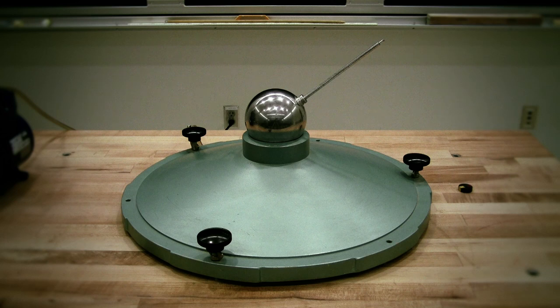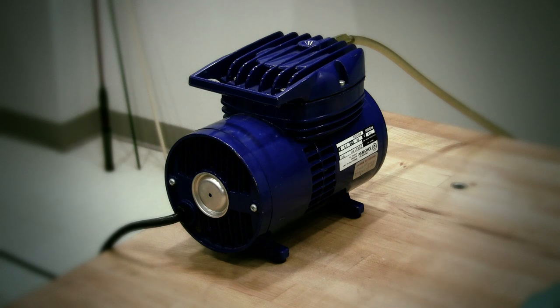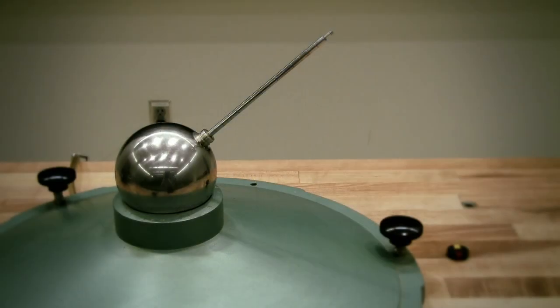We will observe precession on this 4-inch steel ball and a pump will force air out a hole beneath the ball, supporting its weight and minimizing friction. Note that the ball has a rod attached so one can view the ball spinning. Part of the interior of the ball has been hollowed out to counterbalance the weight of the rod.